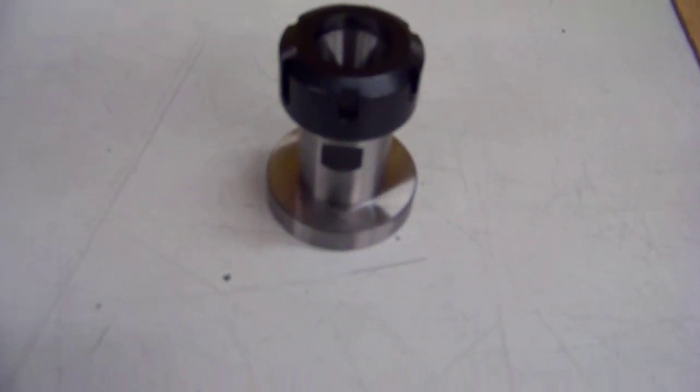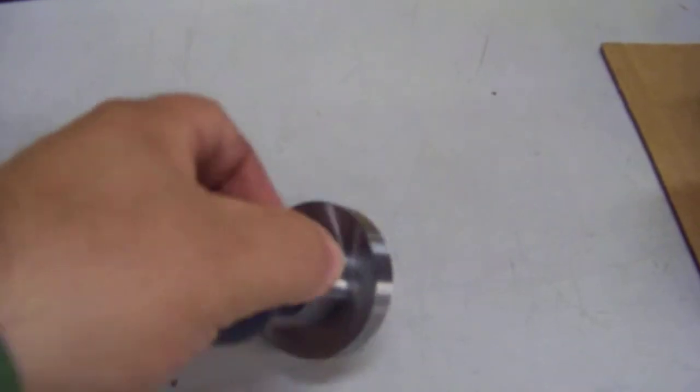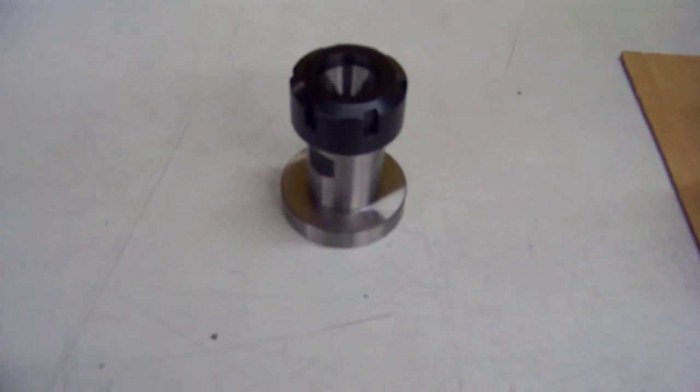So what we did is we made this flange here, again one piece, to protect the bearing. Feel free to give Auto Drill a call.